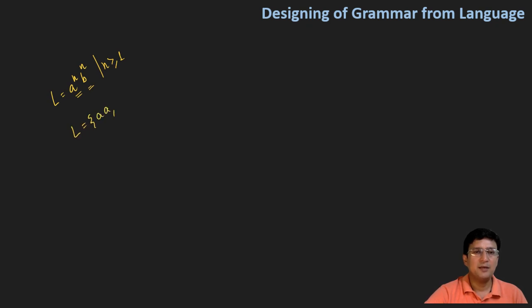So they will be ab, then double a double b, then triple a and triple b. So the number of a's will be equal to number of b's. So first a's will come and then b's will come.